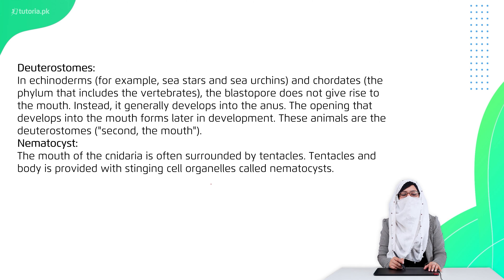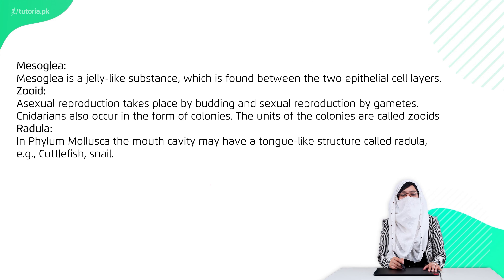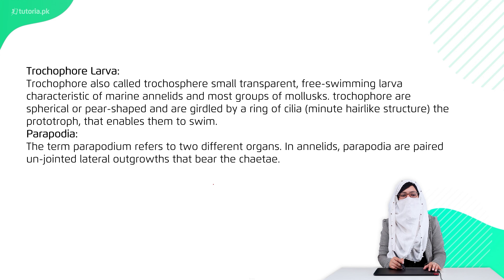Continuing definitions: Nematocyst is a coiled, fluid-filled tentacle with stinging cells inside. Mesoglea is a jelly-like substance between ectoderm and endoderm. Zooids are colonial or gamete-producing units essential for reproduction. Radula is a tongue-like structure present in phylum Mollusca. Trochophore larva is a free-living, transparent larva present in marine annelids. Parapodia are outgrowths in annelids that function as limbs and aid in movement.